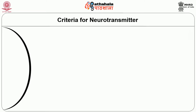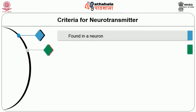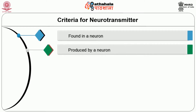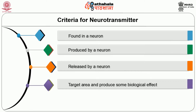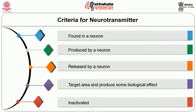So what are the criteria for neurotransmitters? Many substances are categorized as neurotransmitters, for which they should fulfill certain criteria: it must be found in a neuron, it must be produced by a neuron, and it must be released by a neuron. After the release, it must act on the target area and produce some biological effect. After the action, it must be inactivated.